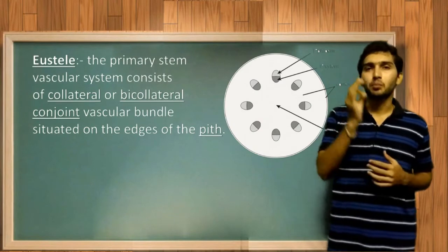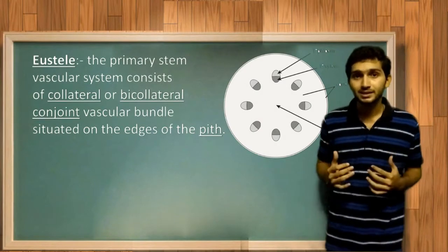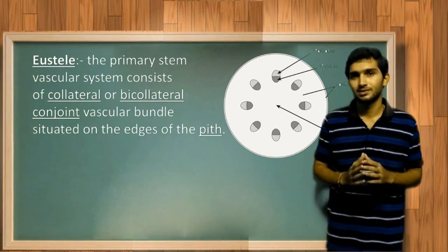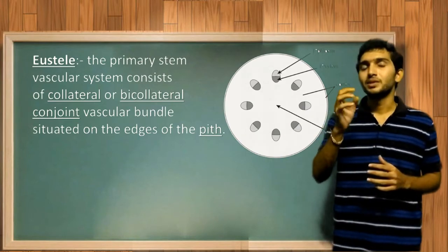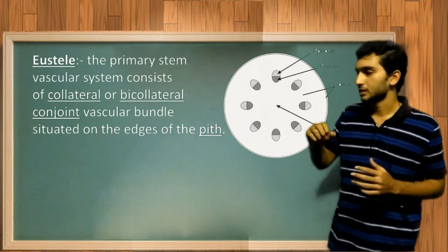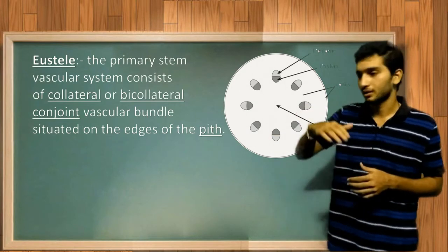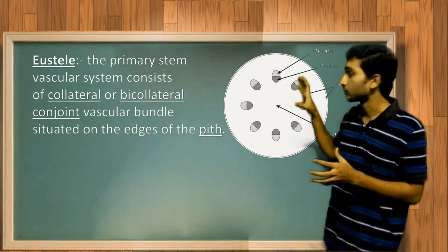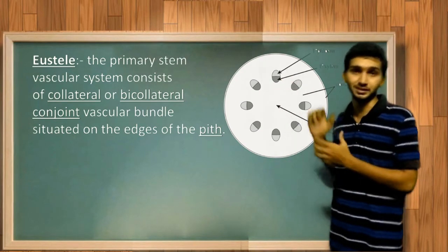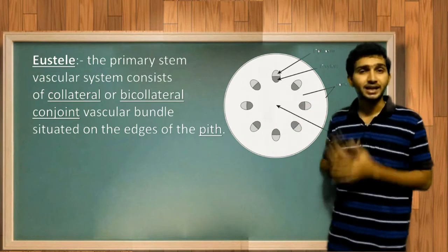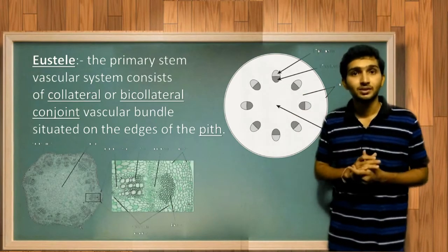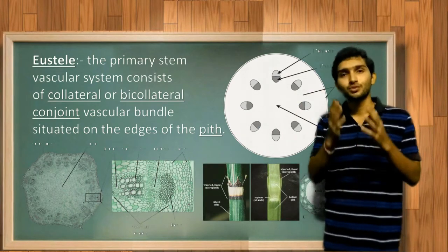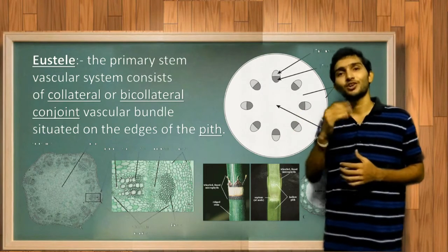Eustele is the primary stem vasculature that contains collateral or bicollateral conjoint vascular bundles, which are separately arranged around the pith at the edges. We can find these vascular bundles arranged at the edges of the pith. An example is the Lycopodium stem, as well as Equisetum stems. This type of stele is also found most commonly in dictyosteels.